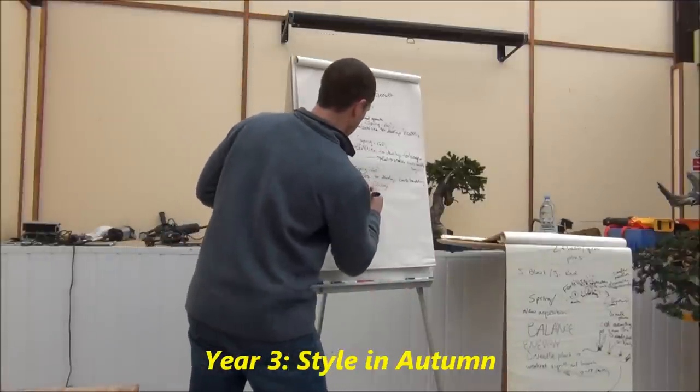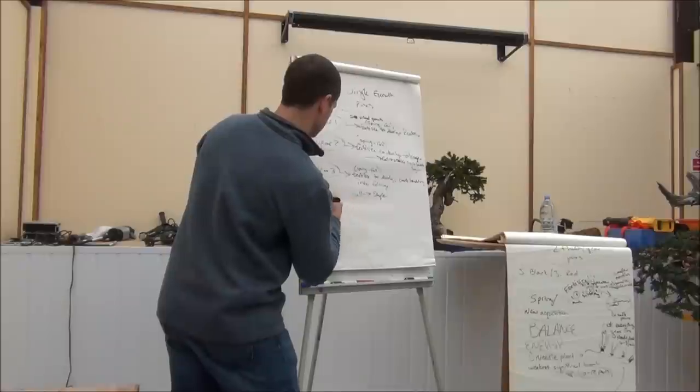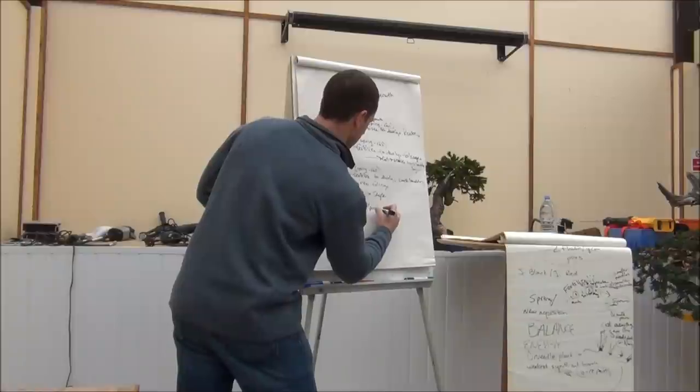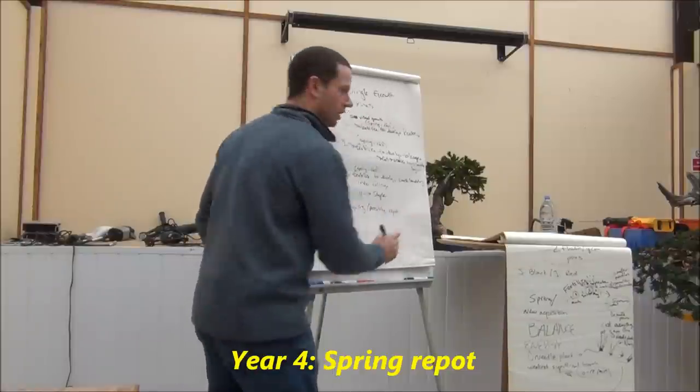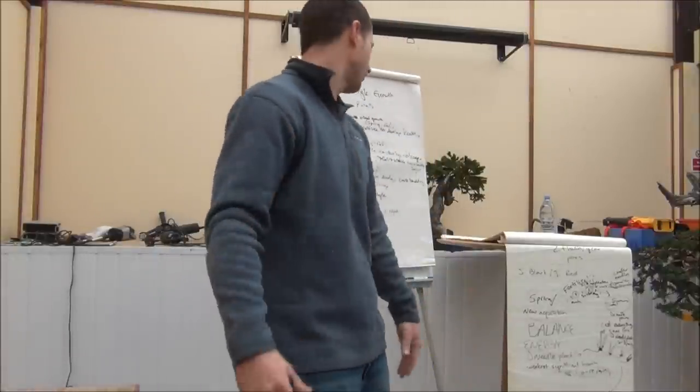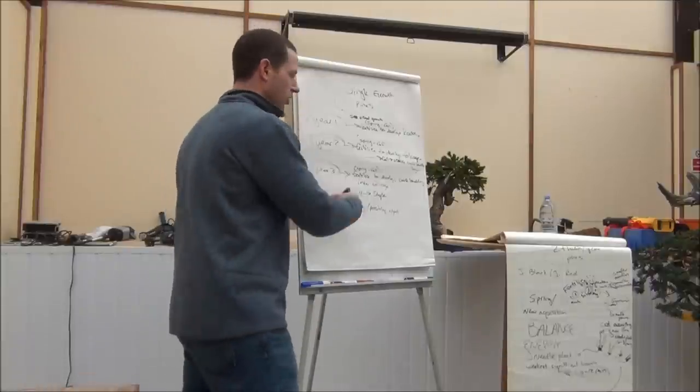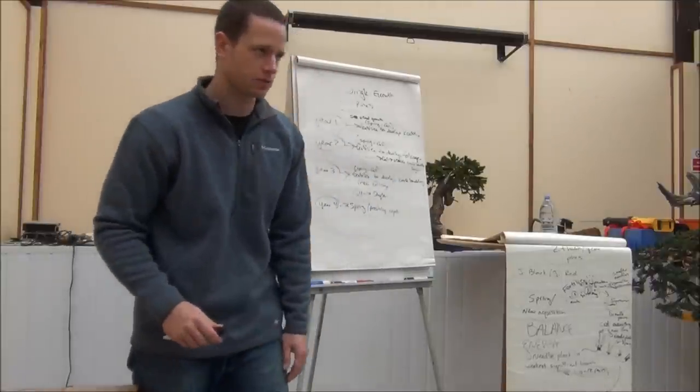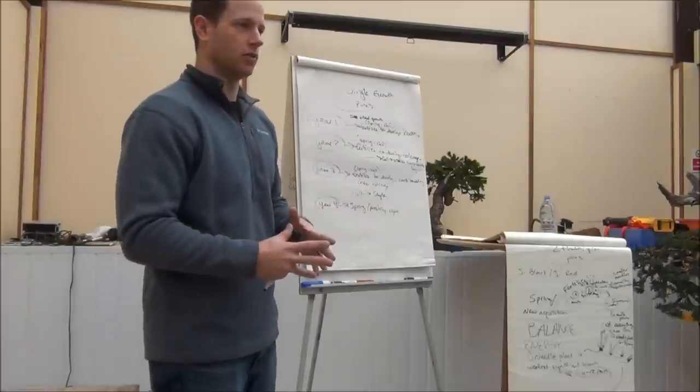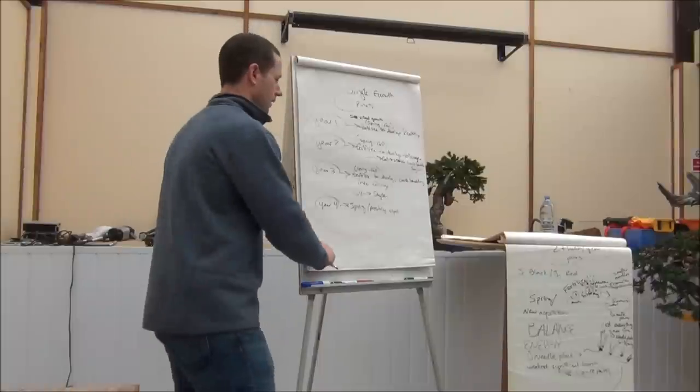So now we're saying fall of year three, we're looking to style. Year four, spring, possibly repot if we want to. If we have a healthy tree, we style it in the fall. Say October, September, October, we style. Tree grows well through the fall. We've got a lot of foliage mass built up. Now we can start to repot in the spring. We're in year four. We could be looking at even showing this tree in year five. It's possible. Very possible. Five years out of the mountain, showable tree. Very rarely is that achievable. Not a bad thing to strive for.